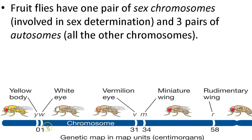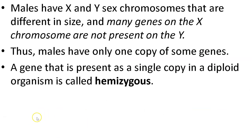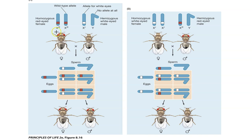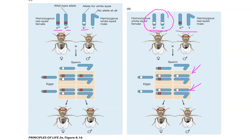Fruit flies have only one pair of sex chromosomes involved in sex determination and three pairs of autosomes — four chromosomes in total. A gene present in only a single copy in males (X and Y) is called hemizygous — you don't need to know that for the test. Morgan's experiment showed that the gene for eye color was carried on the X chromosome. Wild type is red, the mutant allele is white. With a homozygous dominant red-eyed female crossed with a white-eyed male, every fly will have red eyes. But if you have a white-eyed female and a red-eyed male, all the males will have white eyes because the X chromosome came from mom.